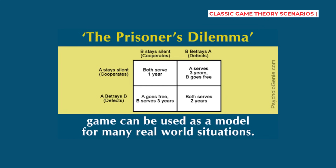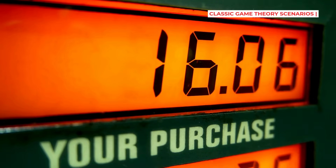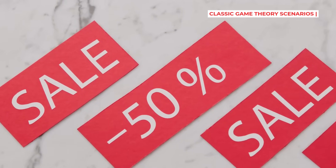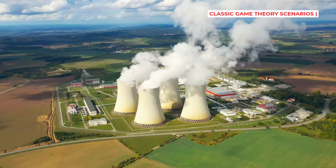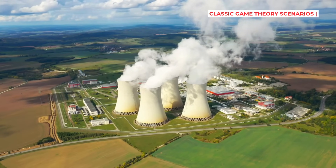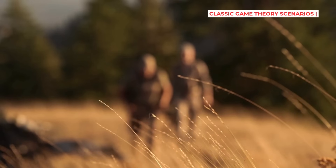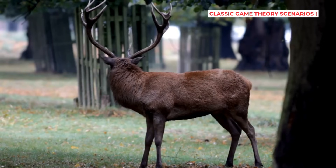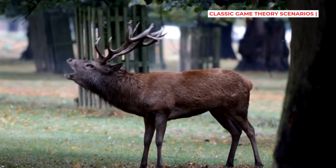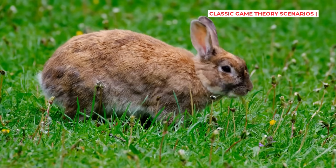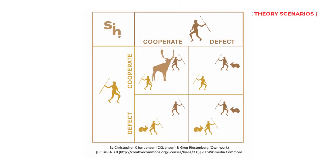This same pattern shows up everywhere. Companies could agree to keep prices high, but there's always temptation to lower prices to steal customers. Countries could limit carbon emissions, but each one is tempted to keep polluting while others cut back. Picture yourself as a hungry hunter with a choice: work with your partner to catch a massive stag or sneak off to catch a small rabbit. The stag is better, but you need two people. This is the Stag Hunt, and it's all about trust — can you rely on your partner not to abandon you?